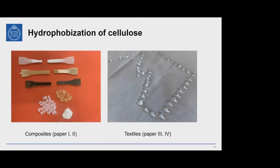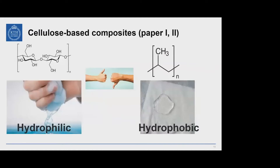Although water is not involved at all in the composite procedure, the compatibility between cellulose and PP is quite poor. We believe that cellulose is hydrophilic and PP is hydrophobic. Therefore, we need to hydrophobize cellulose to increase the interfacial adhesion between these two phases, so that when the composite is subject to a mechanical force, the force can be smoothly transferred from one phase to the other.